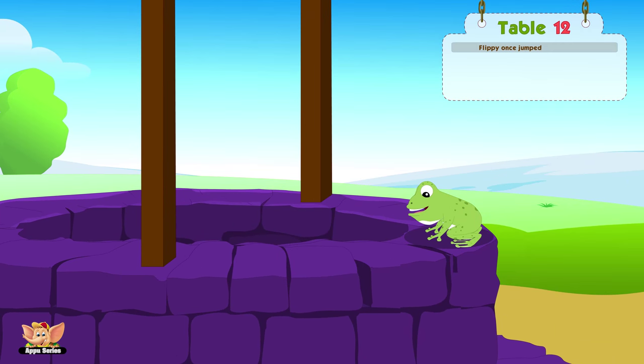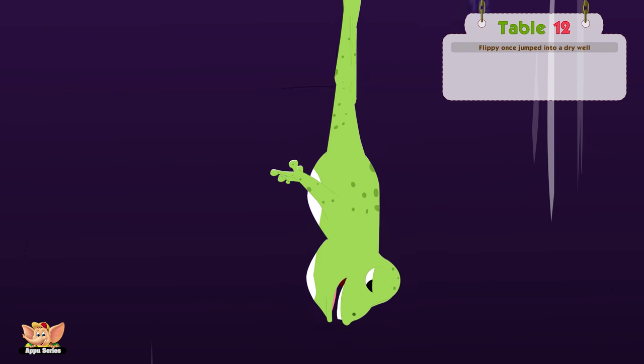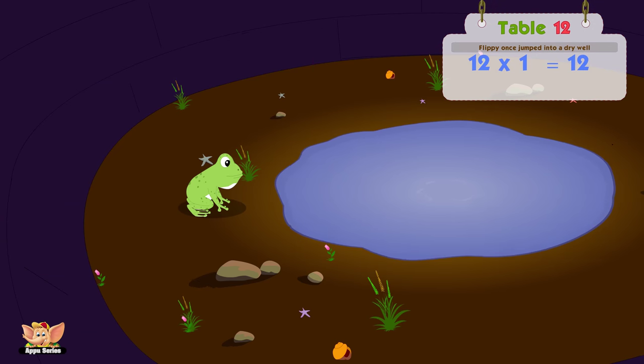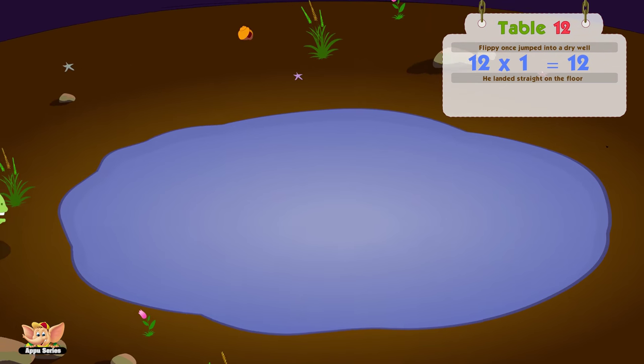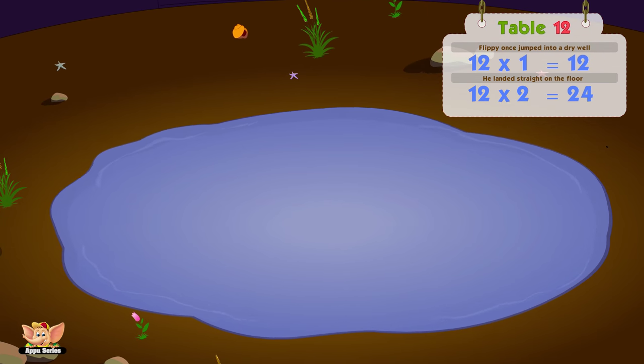Flippi Flippi once jumped into a dry well. Twelve ones is twelve. He landed straight on the floor. Twelve twos are twenty-four.